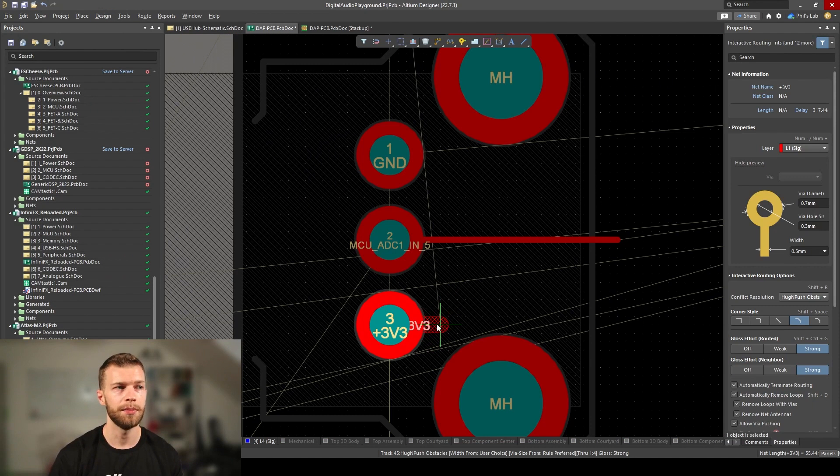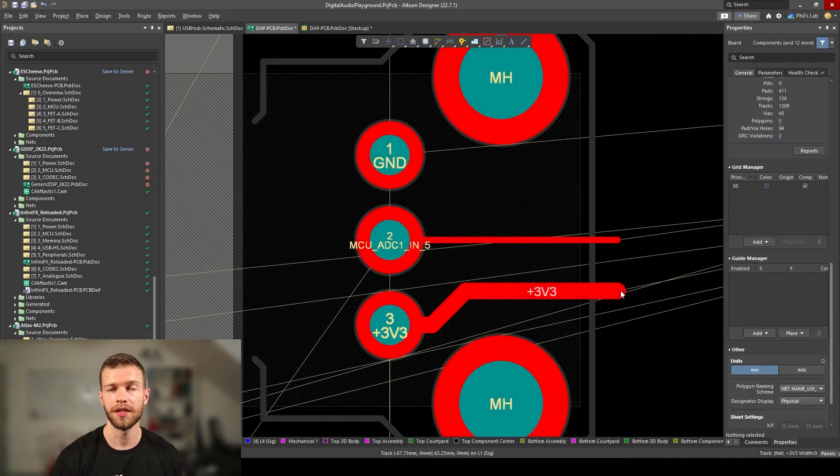Another consideration is trace width. Thinner traces can be less affected by EMI than thicker traces, but thicker traces can carry more current, useful for power connections.